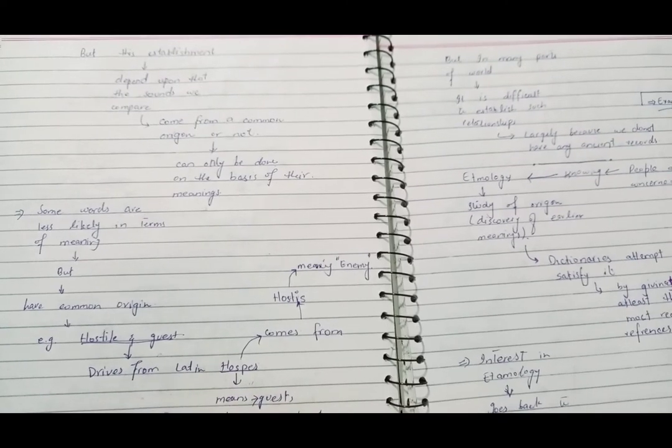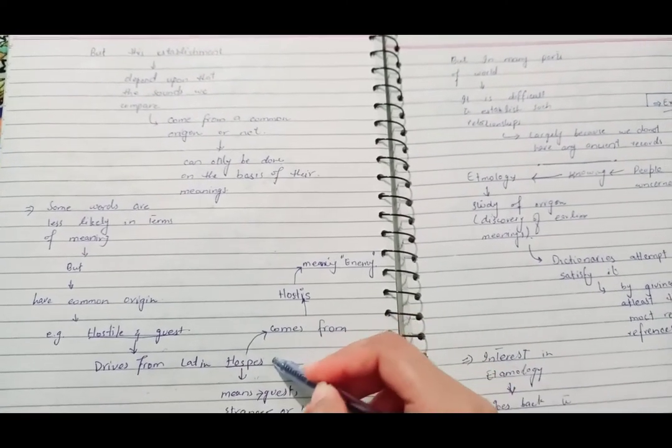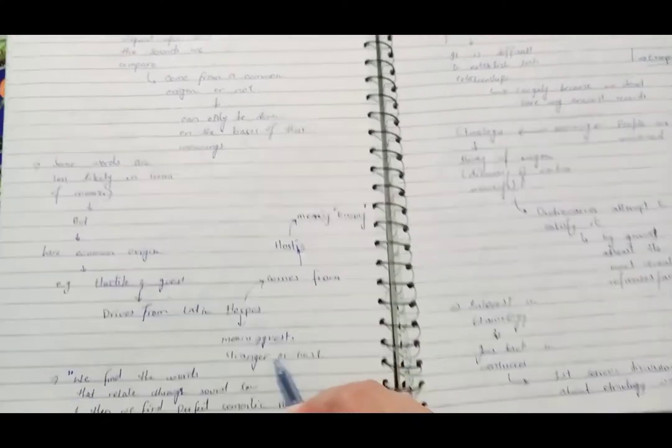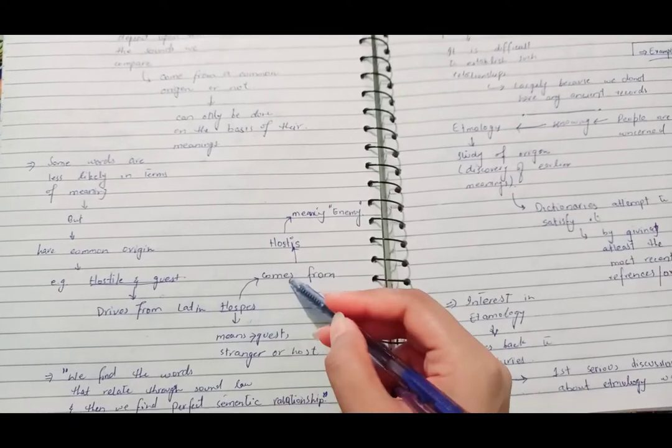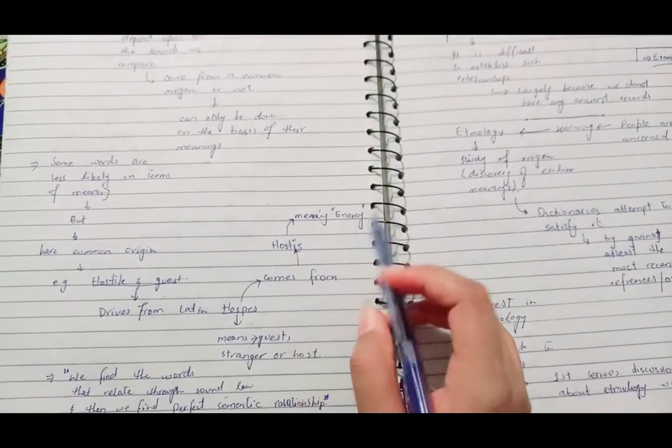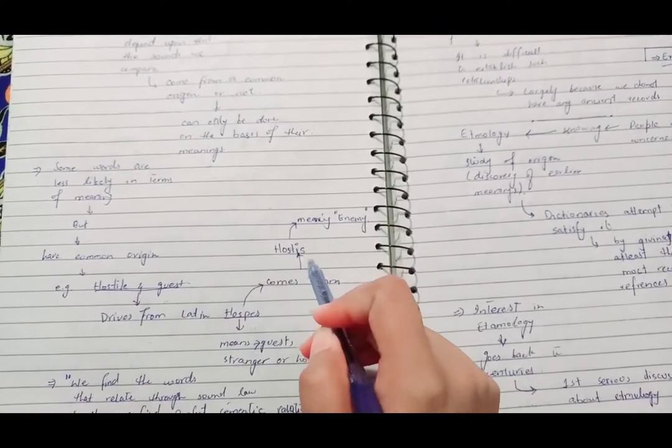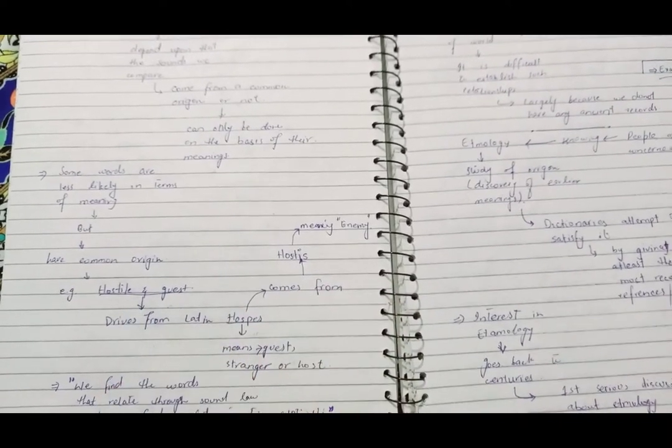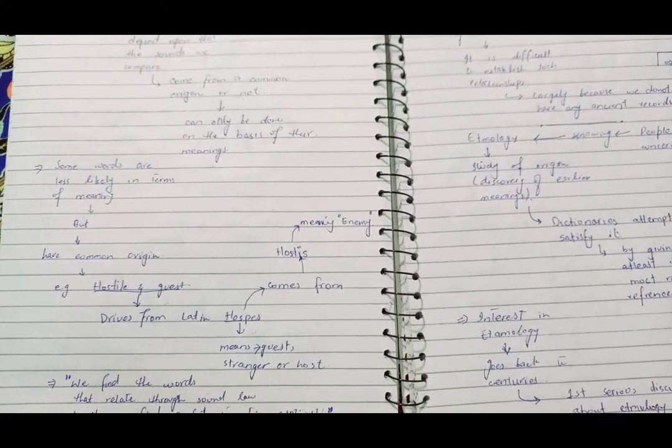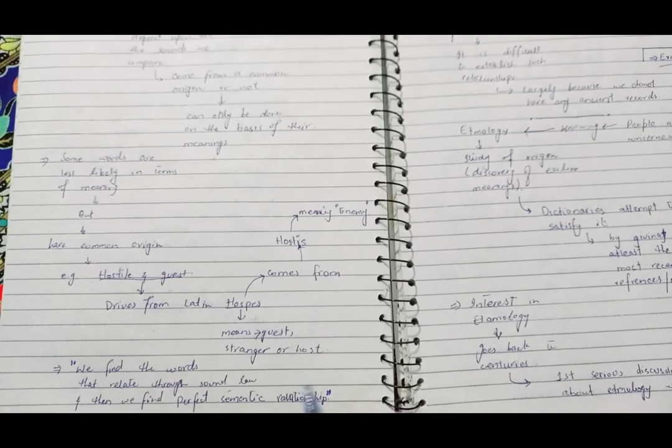These two derive from the Latin word hospice. After deriving, hospice means guest, stranger, and host. Hospice comes from hostis which means enemy. Hostis means enemy. We find a correlation of sounds and develop a perfect semantic relationship with each other.